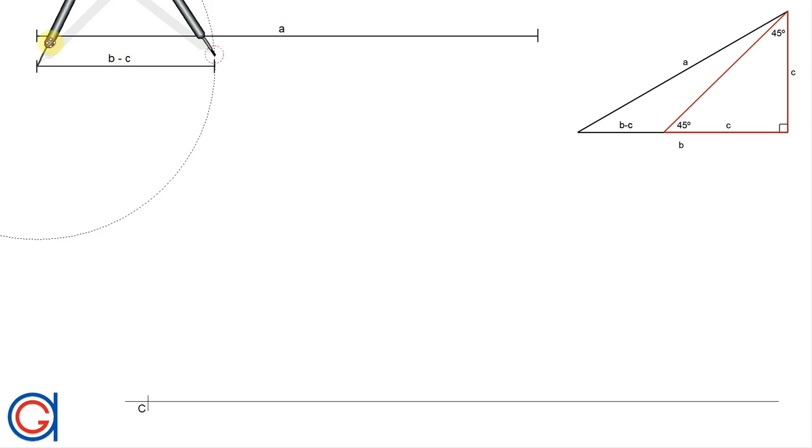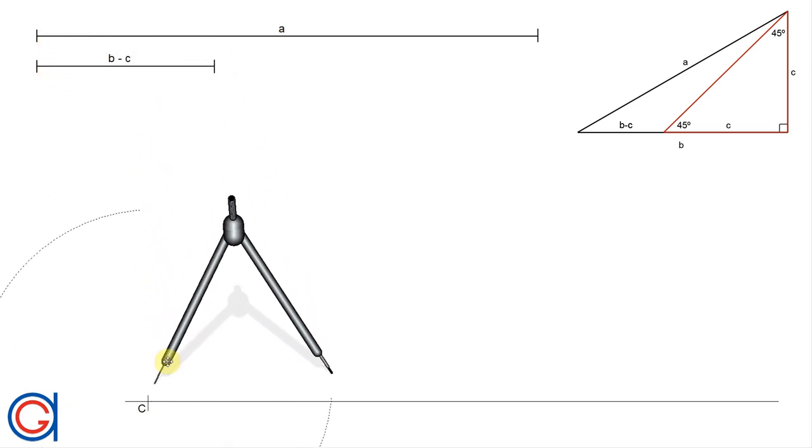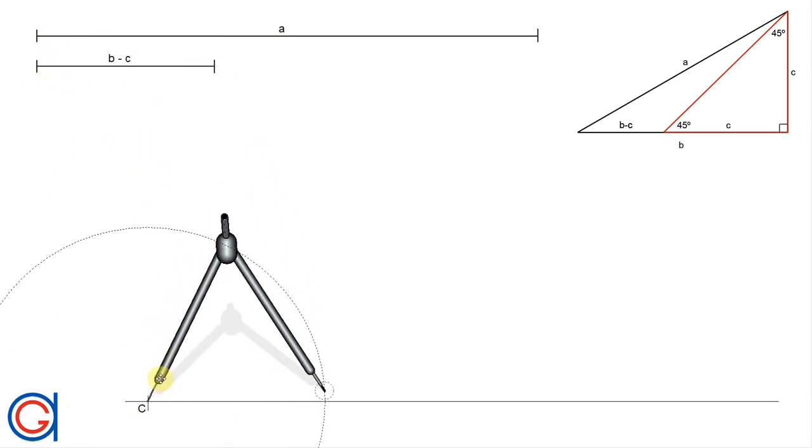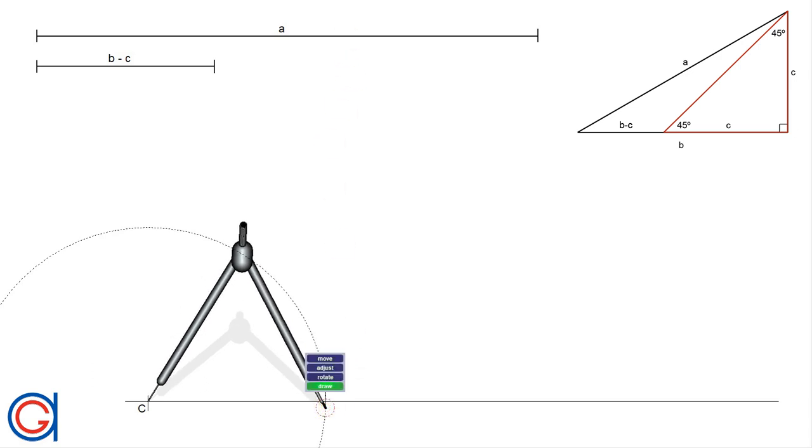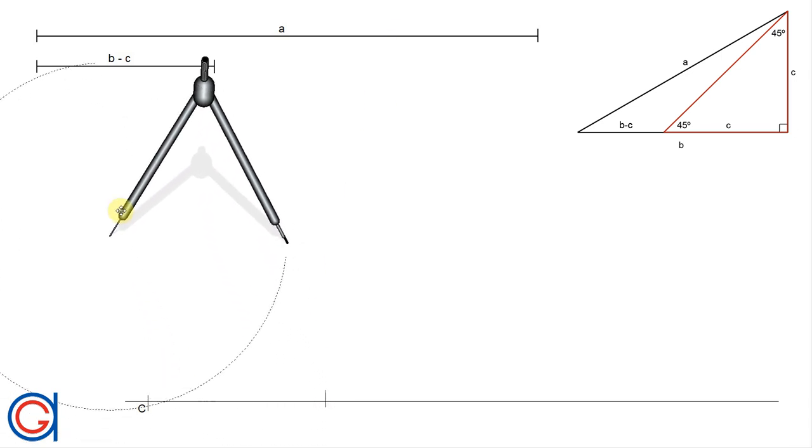The next step is with our compass we set the compass to the given subtraction of the two sides B minus C. And we are going to transport this onto the horizontal line setting our compass on vertex C. We describe an arc cutting the horizontal line and we will get a new auxiliary point which we will call X.